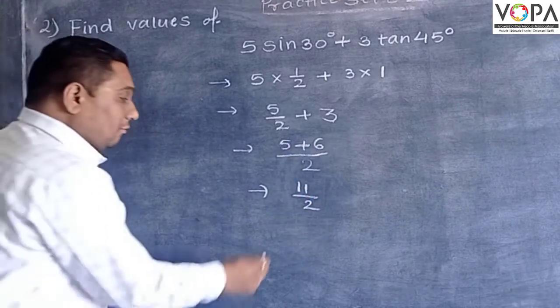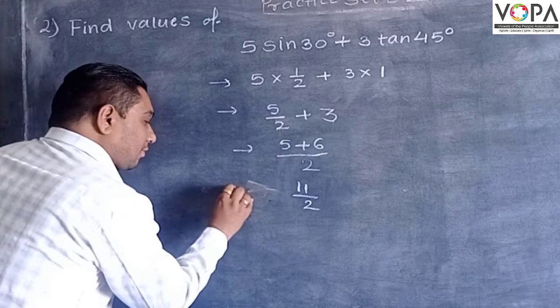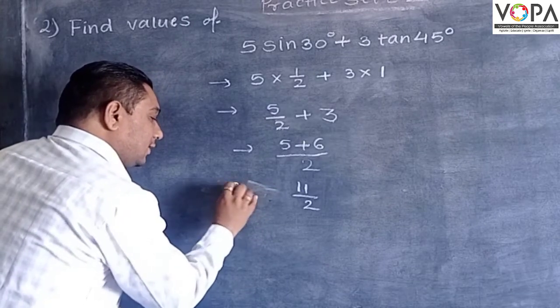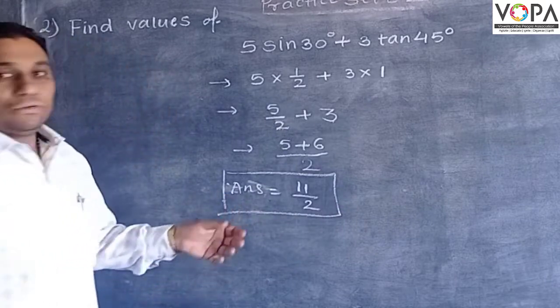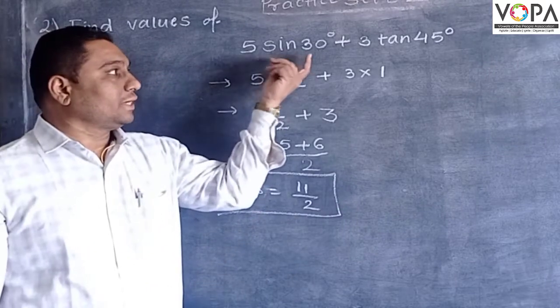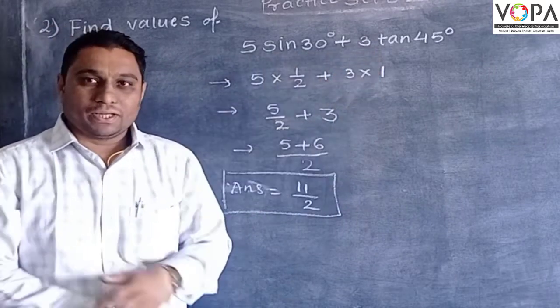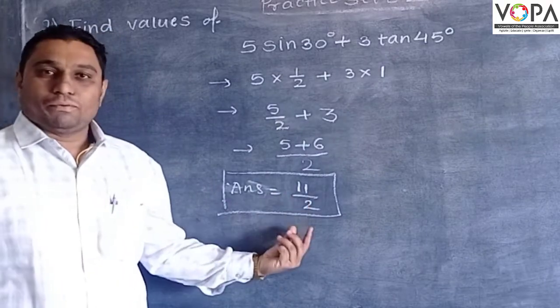So therefore, the value of the answer is 11 upon 2. So value of this equation 5 sin 30 degree plus 3 tan 45 degree is 11 upon 2.